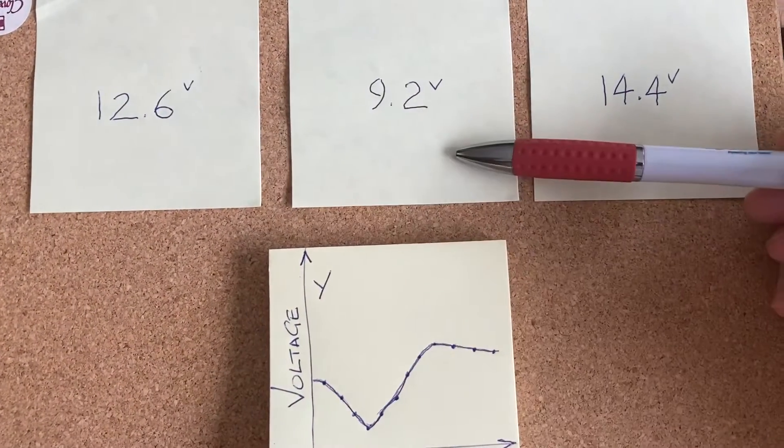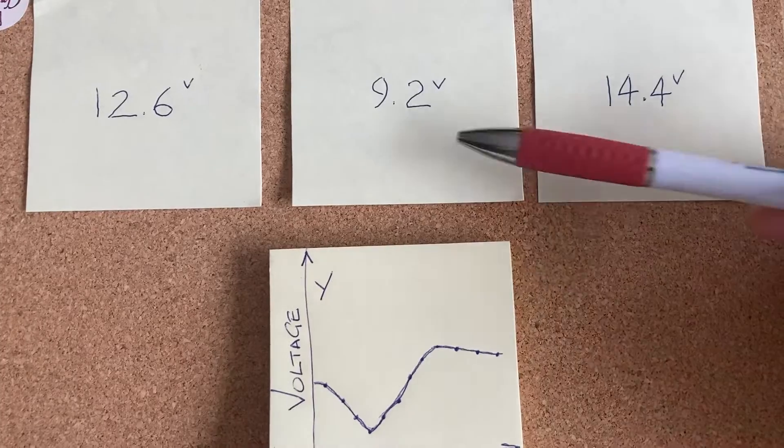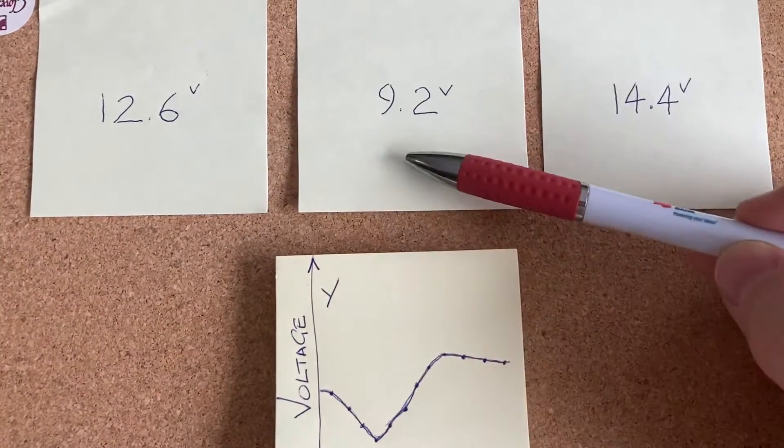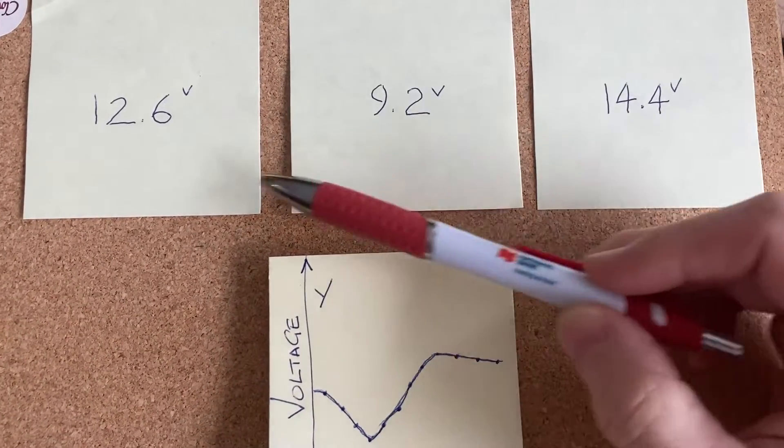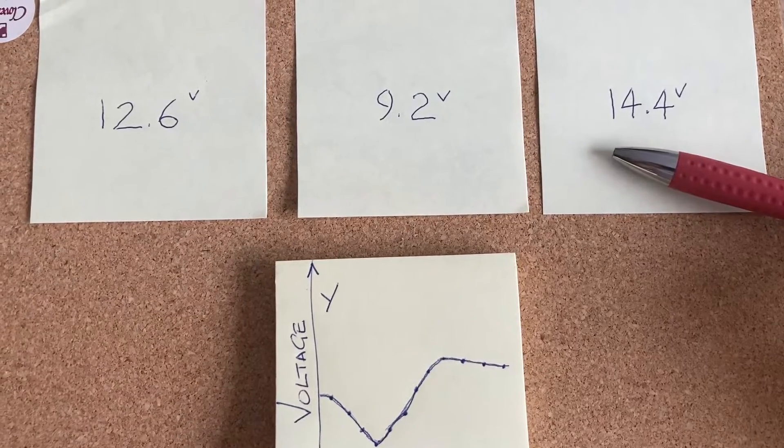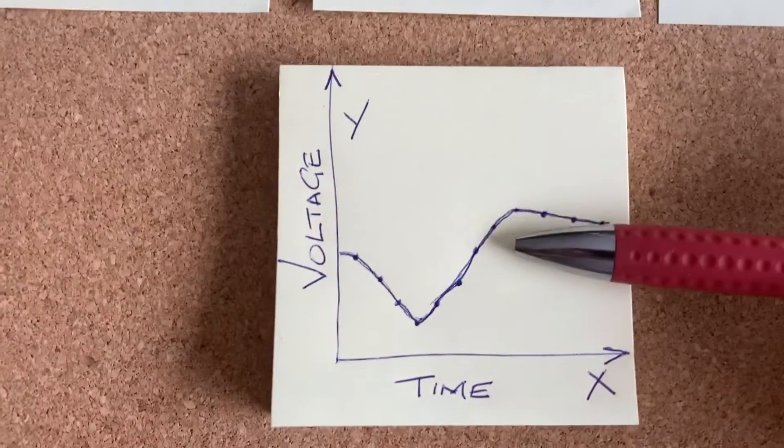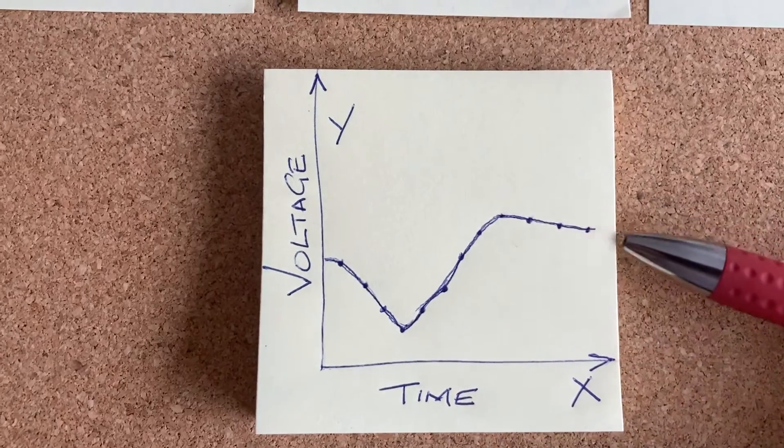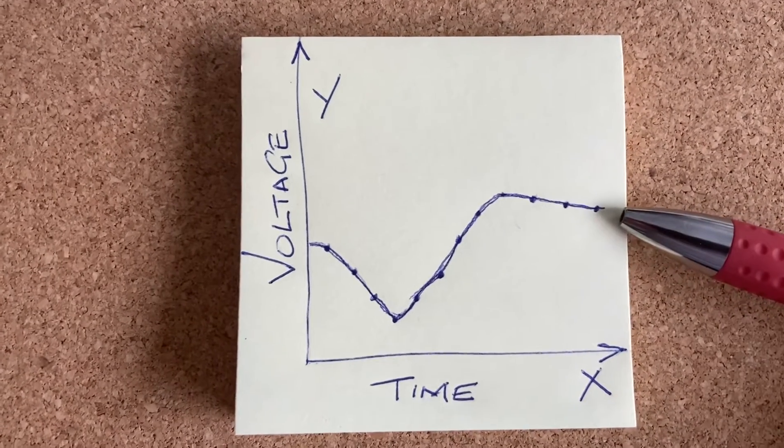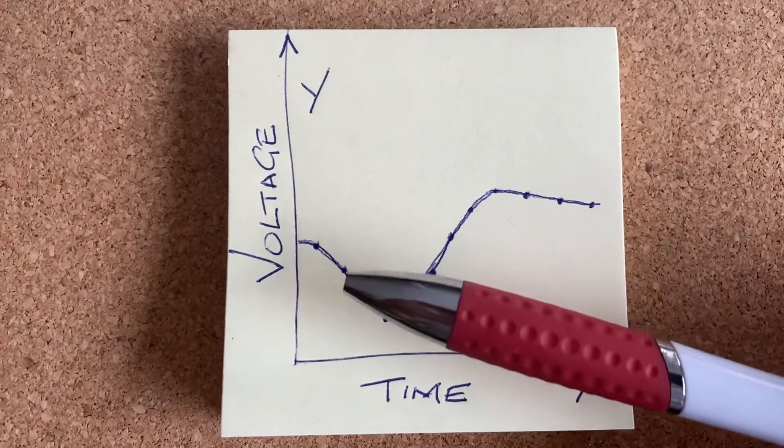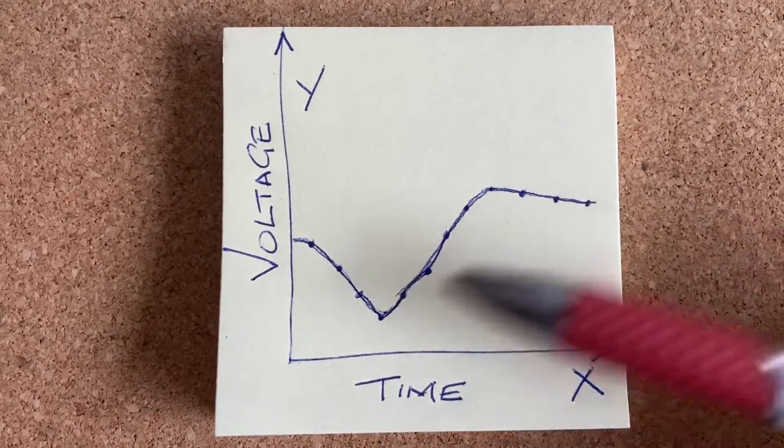So instead of numerical values at set points in time that leave you mentally plotting what is actually going on with a particular circuit, the scope will actually do it for you. It has the wherewithal to connect the dots, although on some scopes you can actually select dot representation on screen as opposed to line or vector presentations.